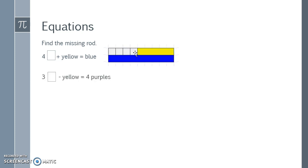Three white minus a yellow equals four purples. So I have my four purples stacked here. And I know that when I take away this yellow part, I'm going to have three copies of what minus the yellow equals four purples.